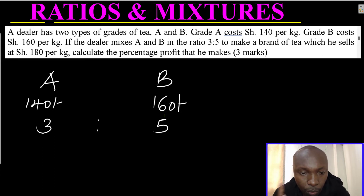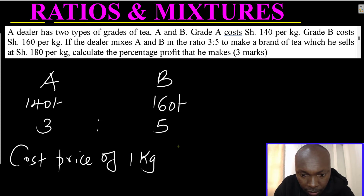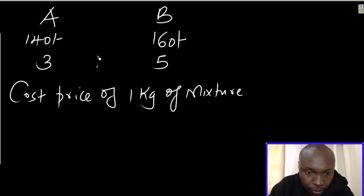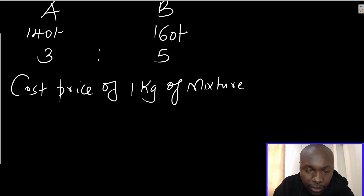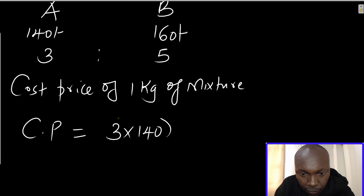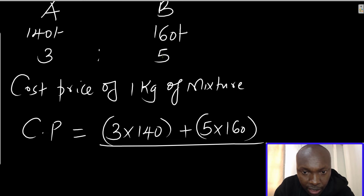Using this information we can get the cost of one kg of the mixture. The cost price of one kilogram of the mixture is given by: we take the ratio 3 to 5 — three multiplied by 140 (that is for A), plus five multiplied by 160 (that is for B), then divided by the sum of the ratio, which is 3 plus 5, giving 8.